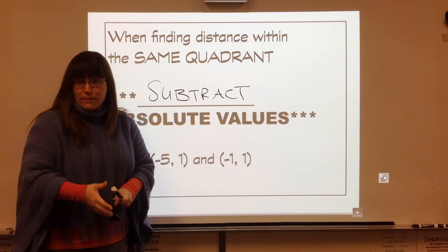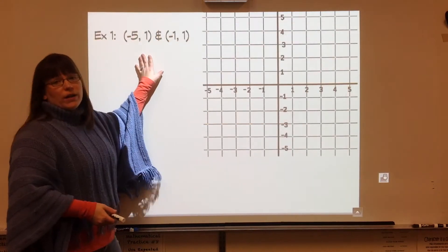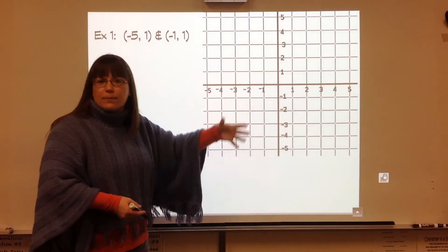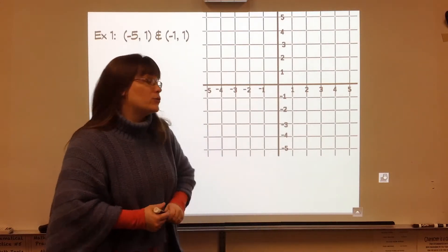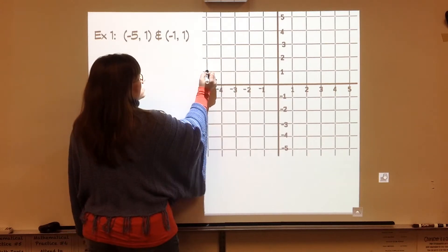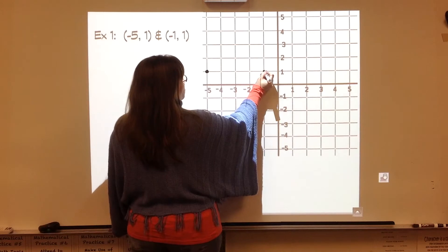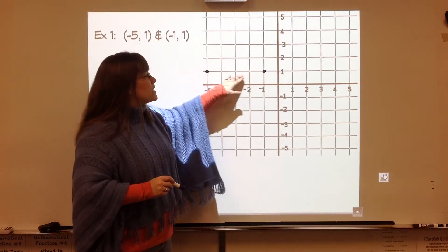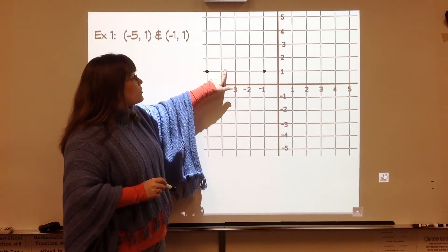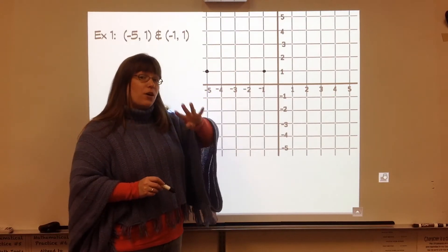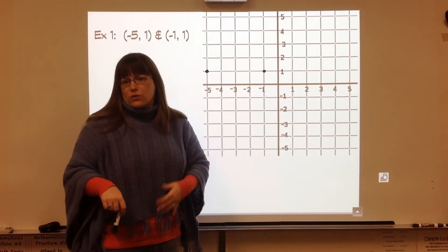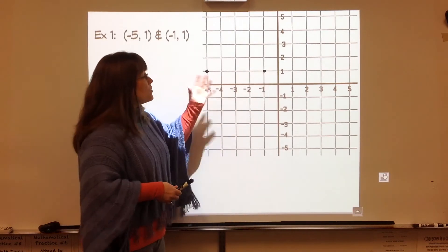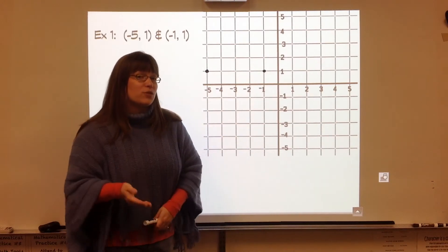Let me show you what I mean by subtracting absolute value. Example one has two points that we're supposed to find the distance of. I'm going to plot them first, show you how to just plain old count, and then show you the absolute value trick. So negative five comma one is right here, and negative one comma one is here. So you notice these two points exist in quadrant two. We have to find the distance between these two points. We could count the spaces and see that they are four units away. If we're not given that each square equals a foot or each square equals a mile, we can just call these squares units. So the answer is four units away, but I want to show you that absolute value trick.